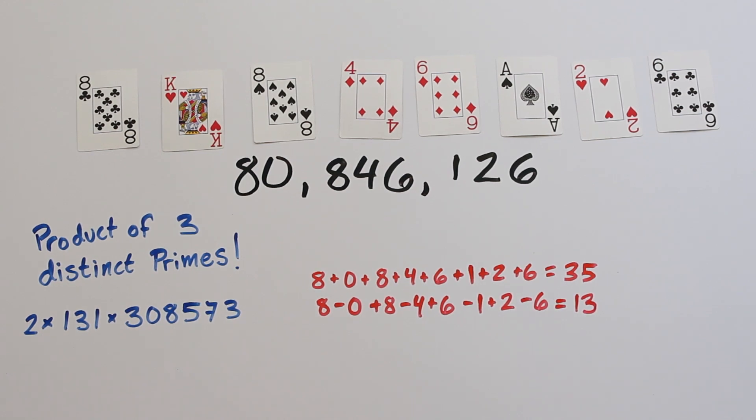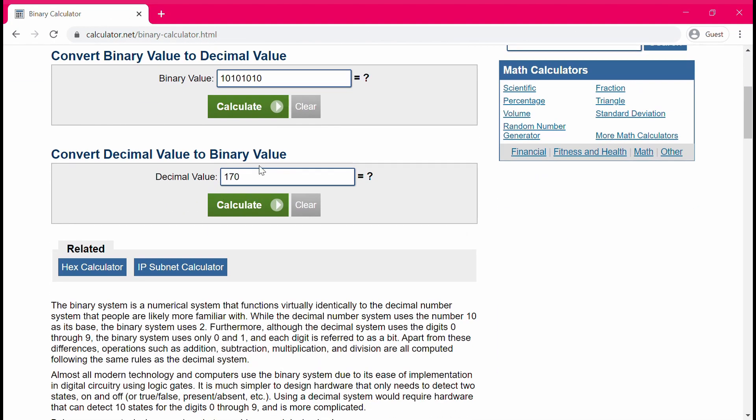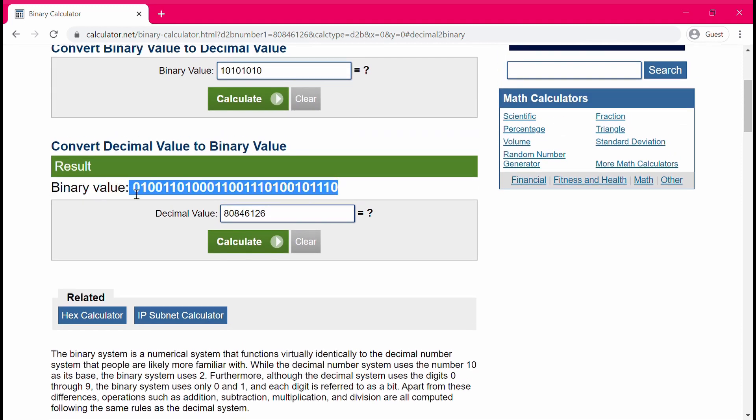We could look at its binary representation. We could just do another Google search to find a calculator for this. And we'll just plug in the number right here. Oh boy. Yeah, I don't see any patterns here.